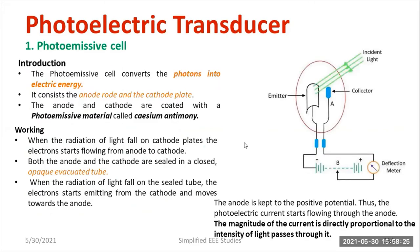What do you mean by photoemissive cell? The photoemissive cell converts photons into electricity. It comprises both anode and cathode, and both are coated with photosensitive material — you can call it photoemissive material. Normally, we are going to employ cesium antimony as the material. It is totally photosensitive.